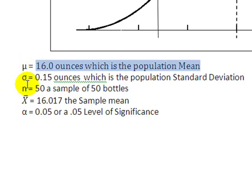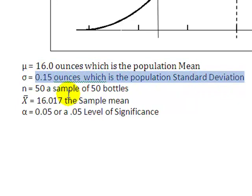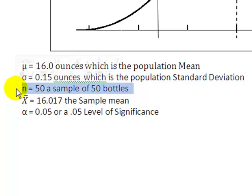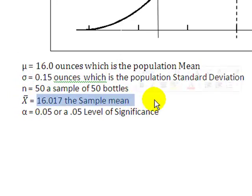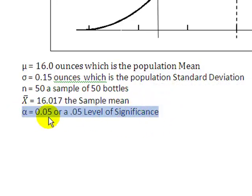It says that it also has a standard deviation of 0.15 ounces, which is sigma or the population standard deviation. We took a sample or n of sample of 50 bottles of ketchup and that sample gave us a sample mean of 16.017 ounces. It asks us to test at a level of significance or an alpha equal to 0.05.